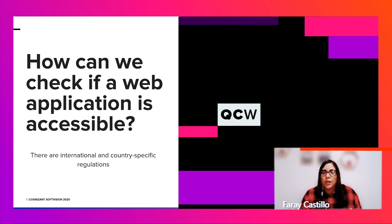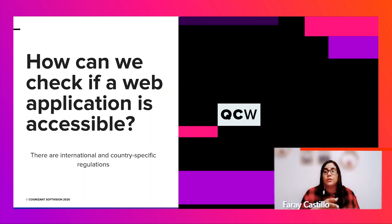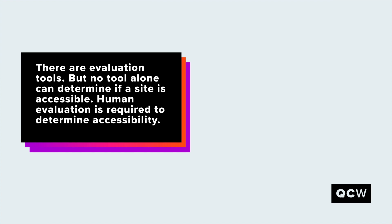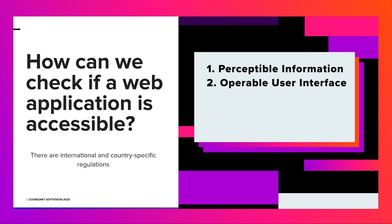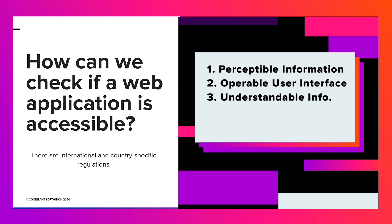There are international and country-specific regulations that define it, recognized as Web Content Accessibility Guidelines — WCAG — which are based on four main principles. First, perceptible information, which specifies text alternatives for content that is not easy to read and hear. Number two, operable user interface, which defines that the website must be fully navigable and interactive via the keyboard. Number three, understandable information, meaning that the language must be very clear.